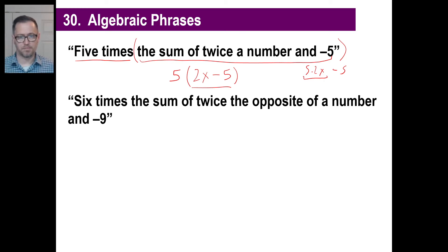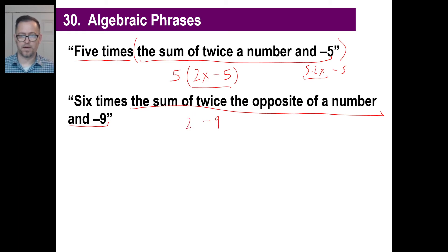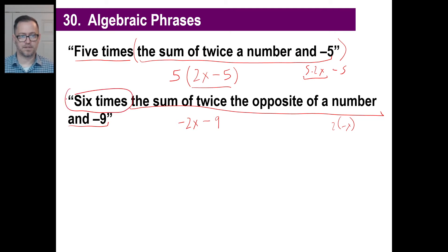Six times the sum of twice the opposite of a number and negative nine. Six is going to be six times something. The inside: the sum of twice the opposite of a number and negative nine. We're adding something to negative nine, so minus 9. Twice the opposite of a number is 2 times negative X, which is negative 2X. So the full expression is 6(−2X − 9).